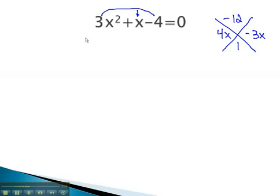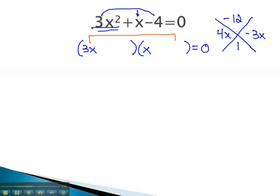Ready to factor now using the reverse FOIL method. The only way to multiply to 3x squared is 3x times x, which means the outside had to be multiplied by 3 to give us one of our numbers.